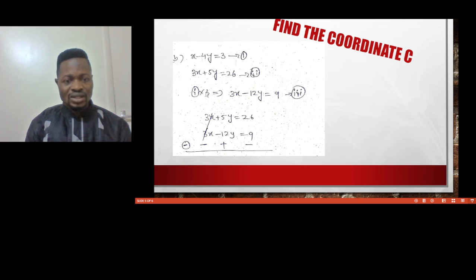Multiplying by 3 gives us 3X minus 12Y equals 9, and this is equation 3. We have 3X in equation 2 and 3X in equation 3, so these can cancel. We are left with 5Y equals 26 and -12Y equals 9.